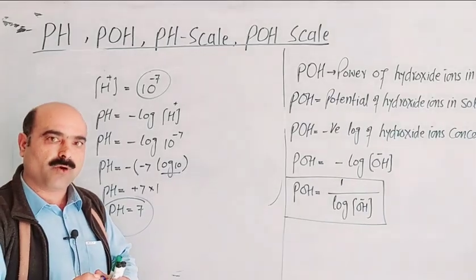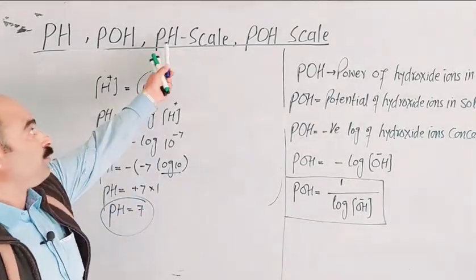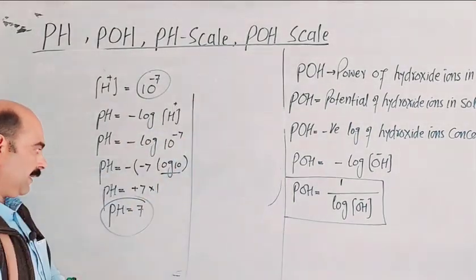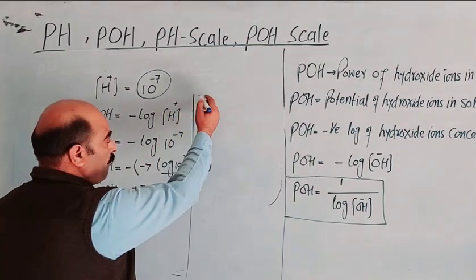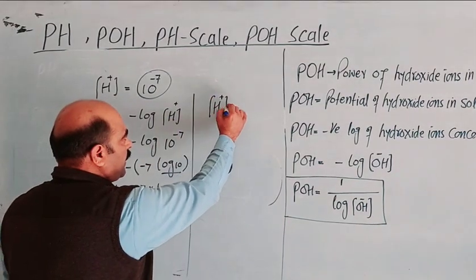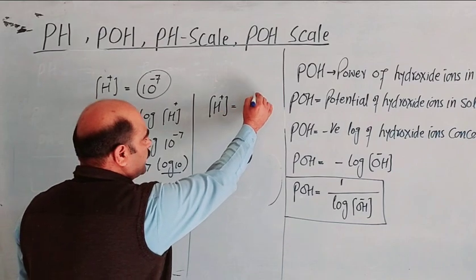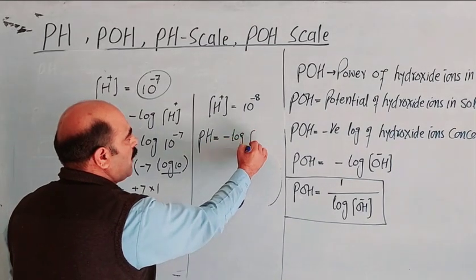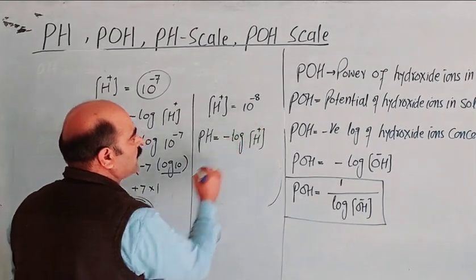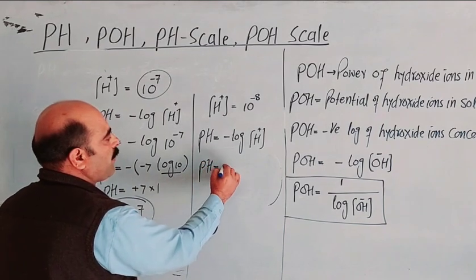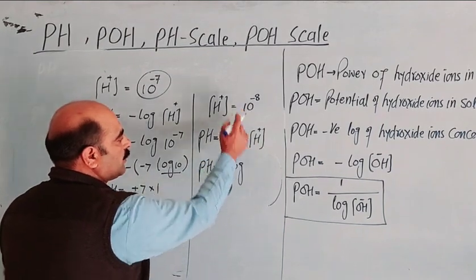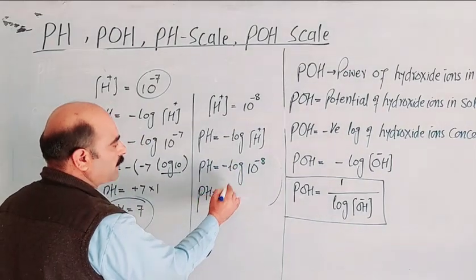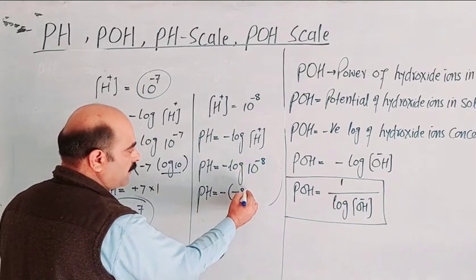If hydrogen ion concentration is equal to 10 raised to the power minus 8, then applying the formula: pH = −log(10⁻⁸) = −(−8) = 8. So pH is equal to 8.